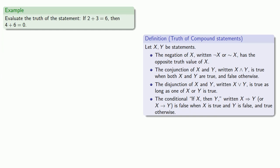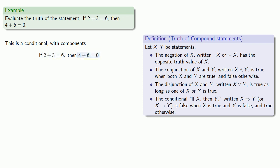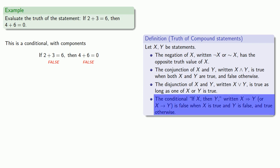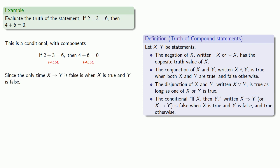It's important to keep in mind this way of evaluating the truth or falsity of a conditional. For example, let's evaluate the truth of the statement: if 2 plus 3 equals 6, then 4 plus 6 equals 0. The component '2 plus 3 equals 6' is false, and '4 plus 6 equals 0' is also false. Since the only time the conditional is false is when x is true and y is false, this conditional is a true statement.